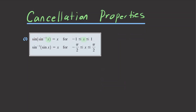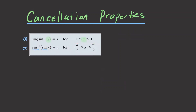Similarly, for the second property, if you switch the composition order and do sine inverse composed with sine, you can again use the cancellation property and the result is x, as long as x is within the restricted domain for sine, which is negative pi over 2 to pi over 2. That's the interval where sine is one-to-one.